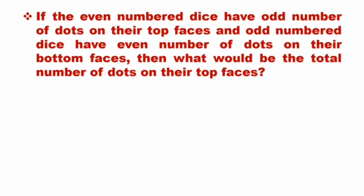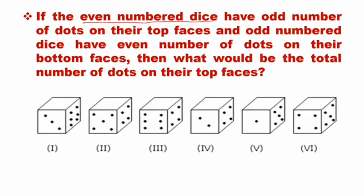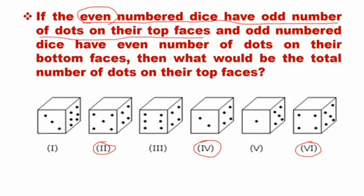Let's move to the question. If the even-numbered dice have an odd number of dots on their top faces — so we have to think: what are even-numbered dice? Dice numbered 2, 4, and 6 are even-numbered dice, and they have an odd number of dots on their top face.